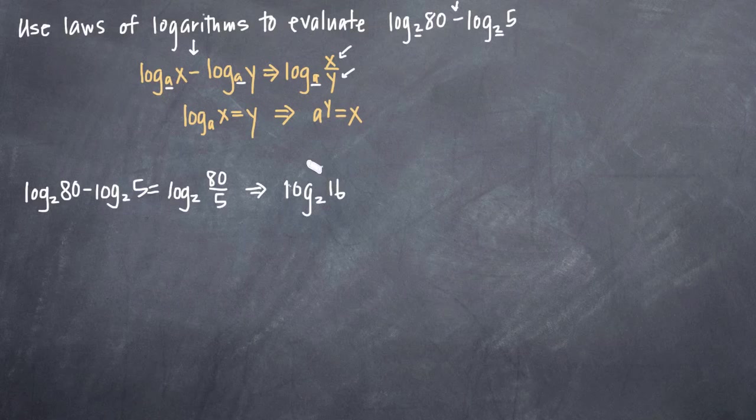So if we use our second rule here that log base a of x is equal to y, something in that form can get converted to a to the y equals x. All we have to do here is take our log base 2 of 16 and let's go ahead and set that equal to, let's call it y, to keep it in the same format or as close to the same format as our definition here. So if we set that equal to some variable, in this case we'll just call it y, then we can transform our log base 2 of 16 equals y into this second form here, a to the y equals x.